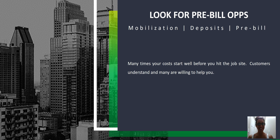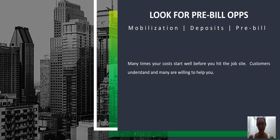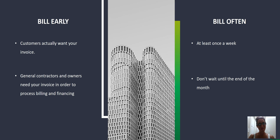Also look for pre-billing opportunities. Another one you can negotiate is mobilization — that's what it's going to take to get on the job site. You have real costs before you even hit the job, so you might as well bill for them. Deposits: a lot of companies will request 50%, 20%, or 30% down — anything helps. And pre-billing comes into play if you've got a large material order or a large piece of equipment that you need to order. You can ask the customer to help by pre-billing that amount so you can pay the vendor and get that equipment on site.